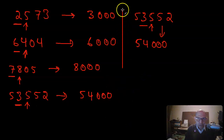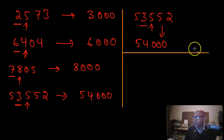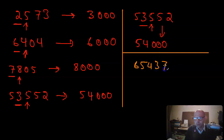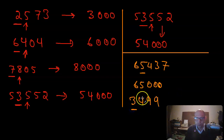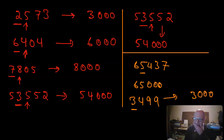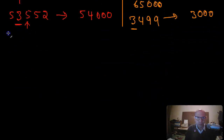For 65,437, rounding to the thousands place, the next digit is 4, less than 5, so round down — the number becomes 65,000. For 3,499, the next digit is also 4, less than 5, so round down — the number becomes 3,000.